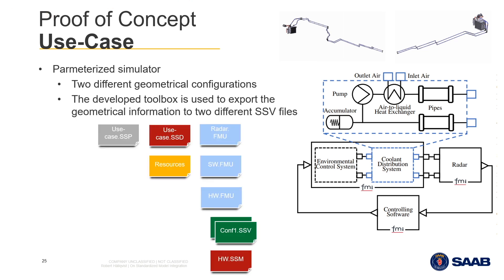The use case SSP file contains three different FMUs in the resources folder: a radar FMU, a hardware FMU representing the environmental control system and the coolant distribution system, and a software FMU. There are two different SSV files representing the two different configurations. In configuration 1, the routing of the coolant distribution system is significantly longer compared to configuration 2. In configuration 1, the coolant power is generated in the aft of the aircraft, whereas it is generated directly behind the cockpit in configuration 2. These SSV files are directly exported from CATIA, and there is one SSM file providing the parameter mappings, as both configurations have the same parameter interface.